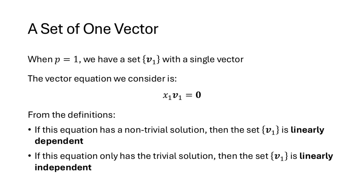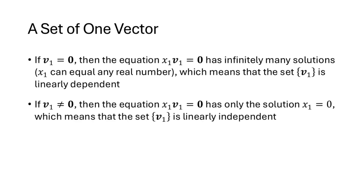When we just have one vector, the vector equation we have to consider is x1 times v1 equals the zero vector. The definition tells us that if this equation has any solution other than x1 equal to zero, then the set containing v1 is linearly dependent. If v1 is the zero vector, we can put any number in for x1 and the left-hand side will equal the right-hand side, so the set is linearly dependent. But if v1 is any nonzero vector, the only solution is x1 equals zero, and the set containing v1 is linearly independent.